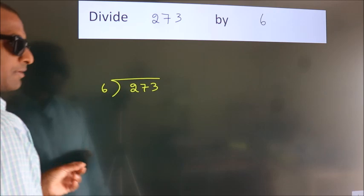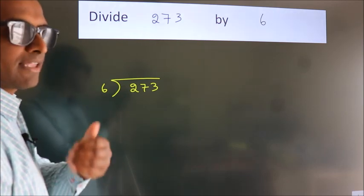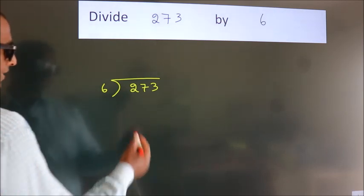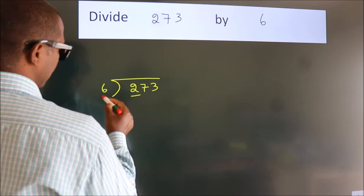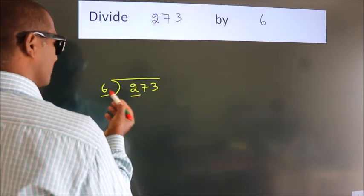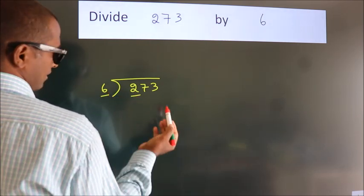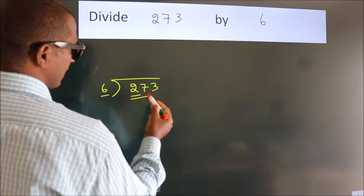This is your step 1. Next, here we have 2, here 6. 2 is smaller than 6, so we should take two numbers: 27.